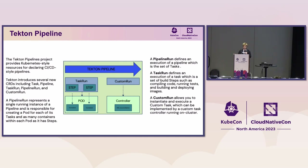For example, the PipelineRun defines the execution of the pipeline itself, which composes multiple tasks. A TaskRun defines the execution of a task, which is a set of steps. We also have a CustomRun that allows you to instantiate and execute custom tasks using any custom class controller, where you could define your own task logic.